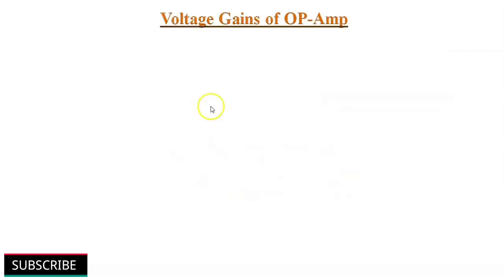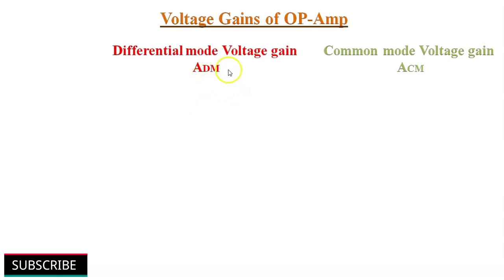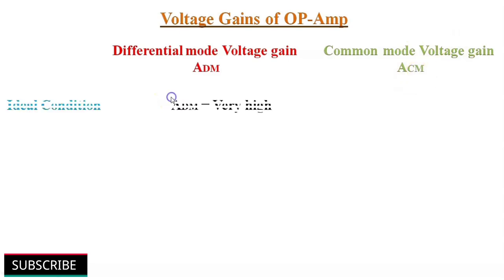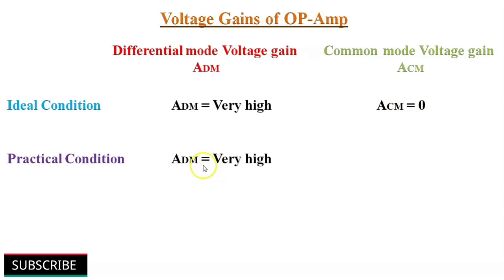From this illustration, we arrive at the conclusion that an operational amplifier has two voltage gains: differential mode voltage gain represented by ADM, and common mode voltage gain represented by ACM. In ideal conditions, ADM is very high and ACM equals 0. But in practical conditions, ADM remains very high while ACM is less than 1.